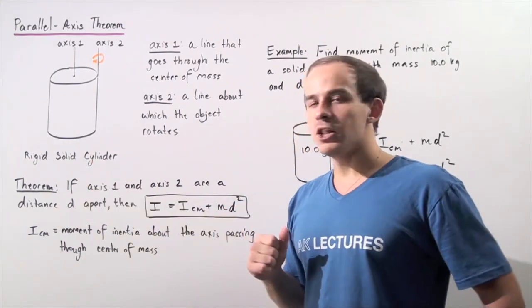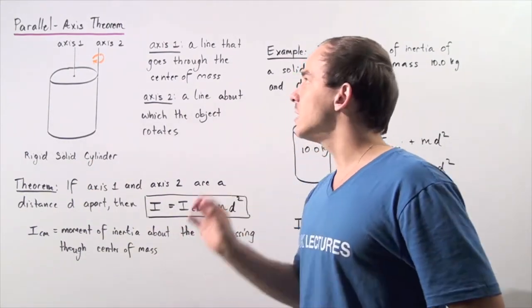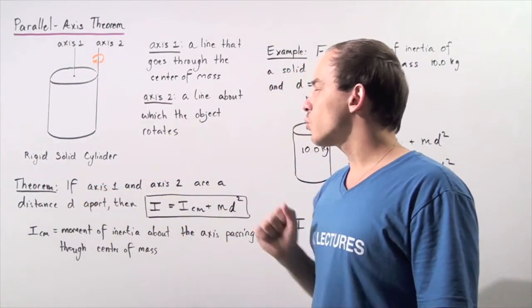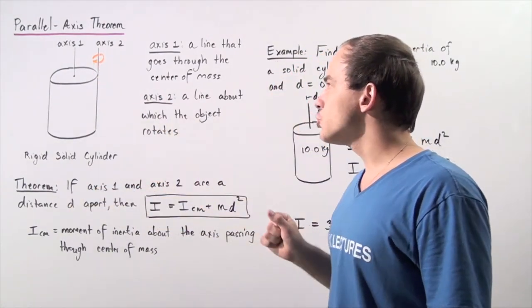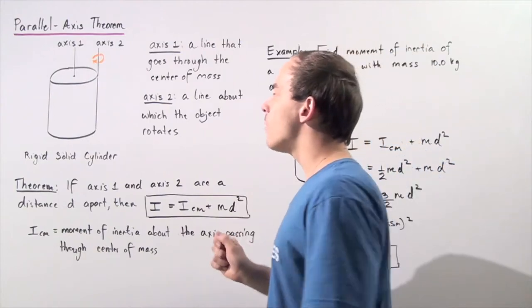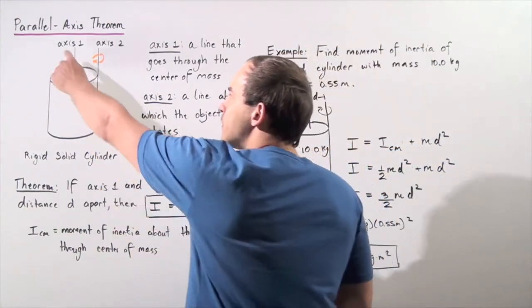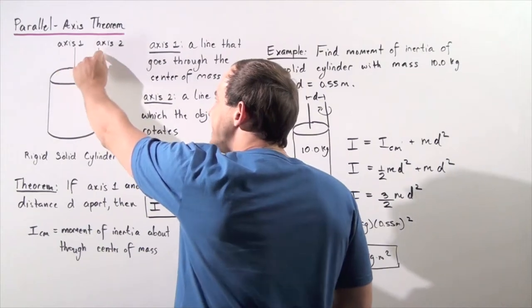Let's look at the following theorem. This is the parallel axis theorem. If axis number one and axis number two are a distance d apart, if the distance from axis number one to axis number two is d,